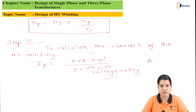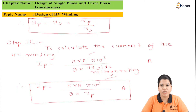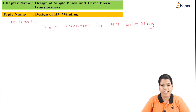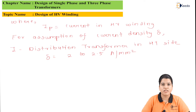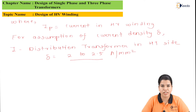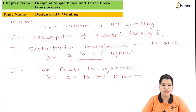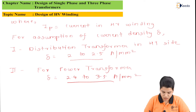This can be written as IP equals KVA multiplied by 10 raised to 3, divided by 3 times VP, where IP is the current in the HV winding. We also need to assume the value of delta, the current density. For a distribution transformer at the HT side, current density should be between 2 to 2.5 ampere per mm squared. For a power transformer, it should be 2.4 to 3.5 ampere per mm squared.